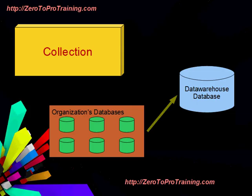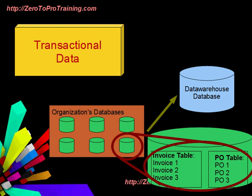Data warehouse is a general term to describe a system used in an organization to collect data into a central data location. Most of the collected data is transactional in nature, such as invoices, purchase orders, etc.